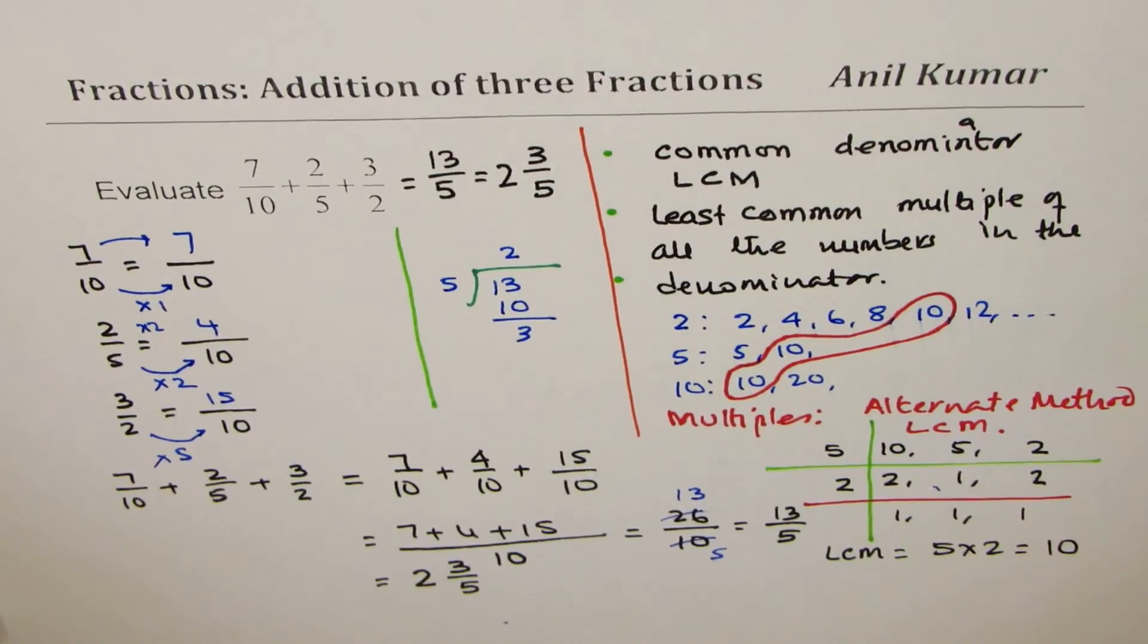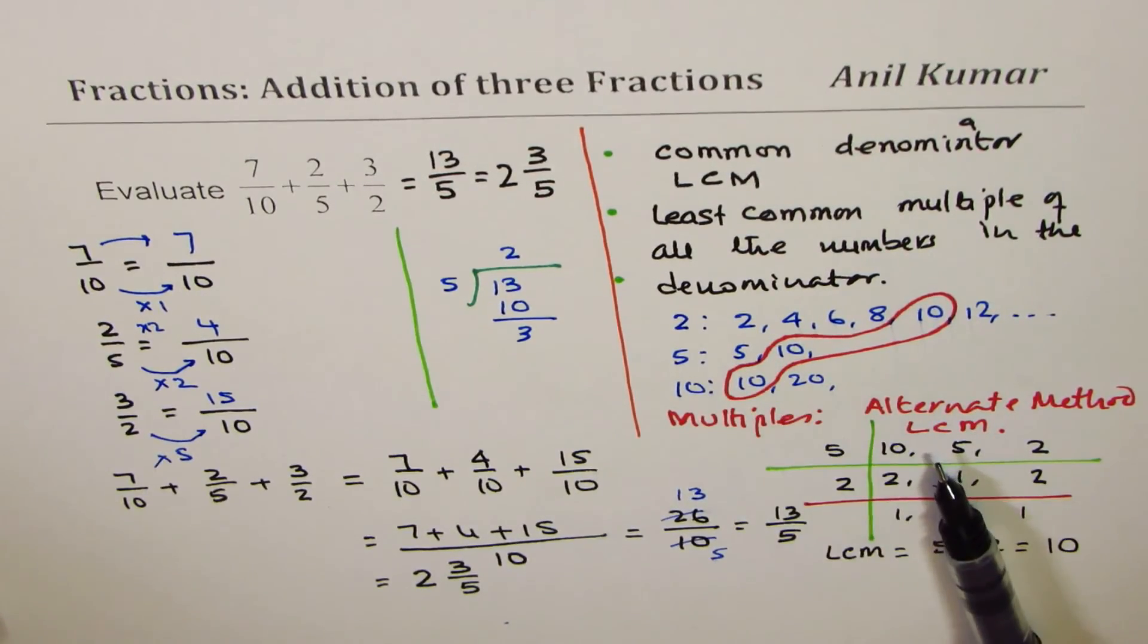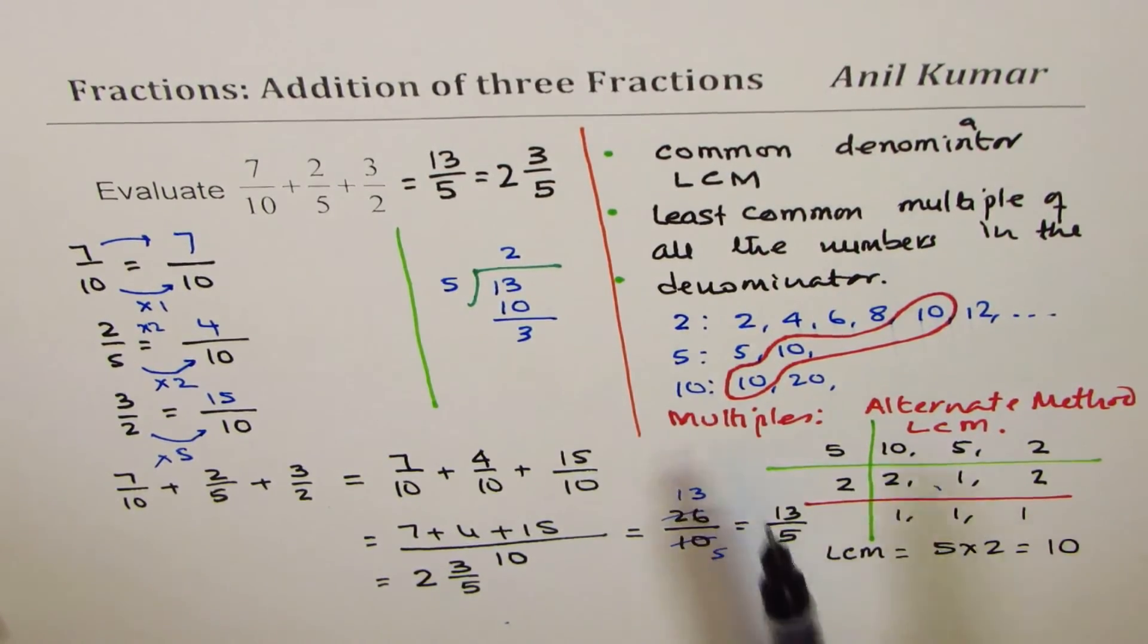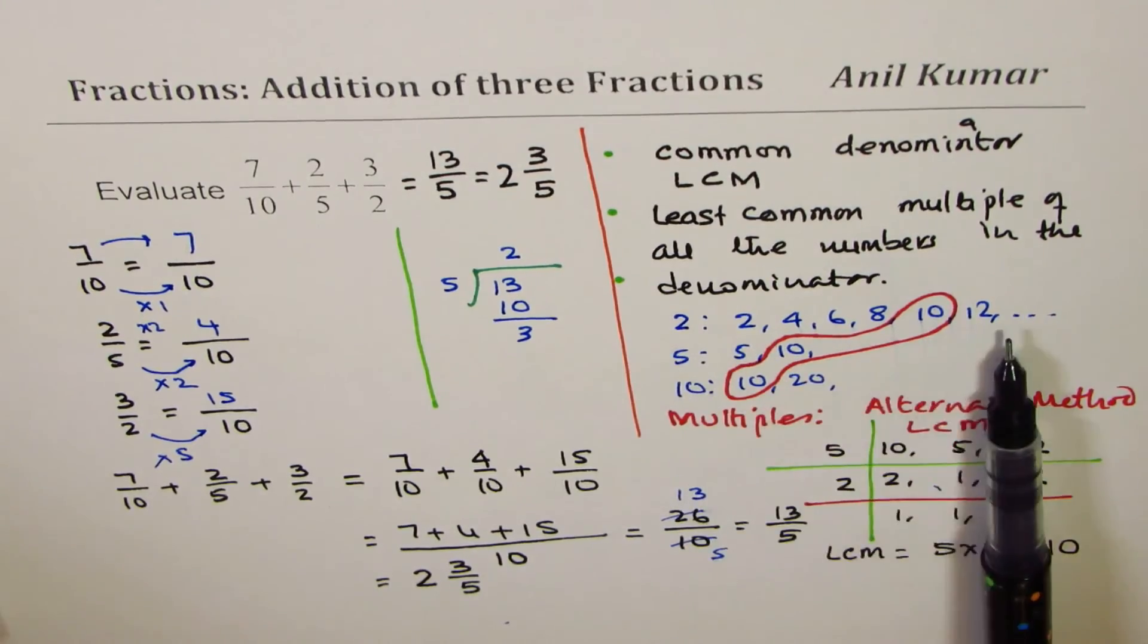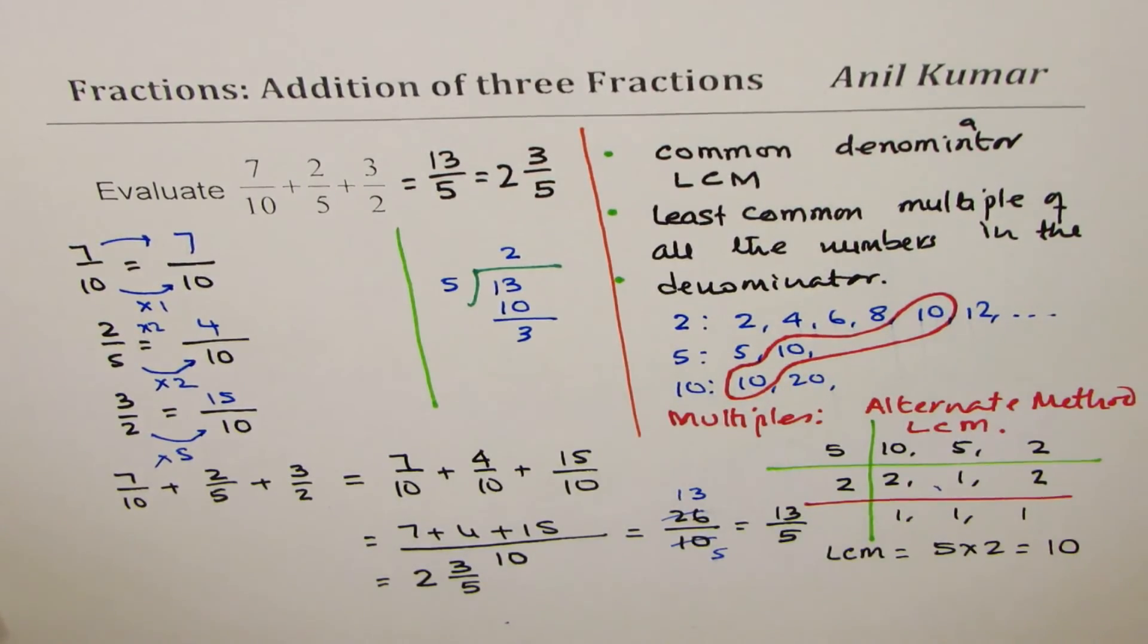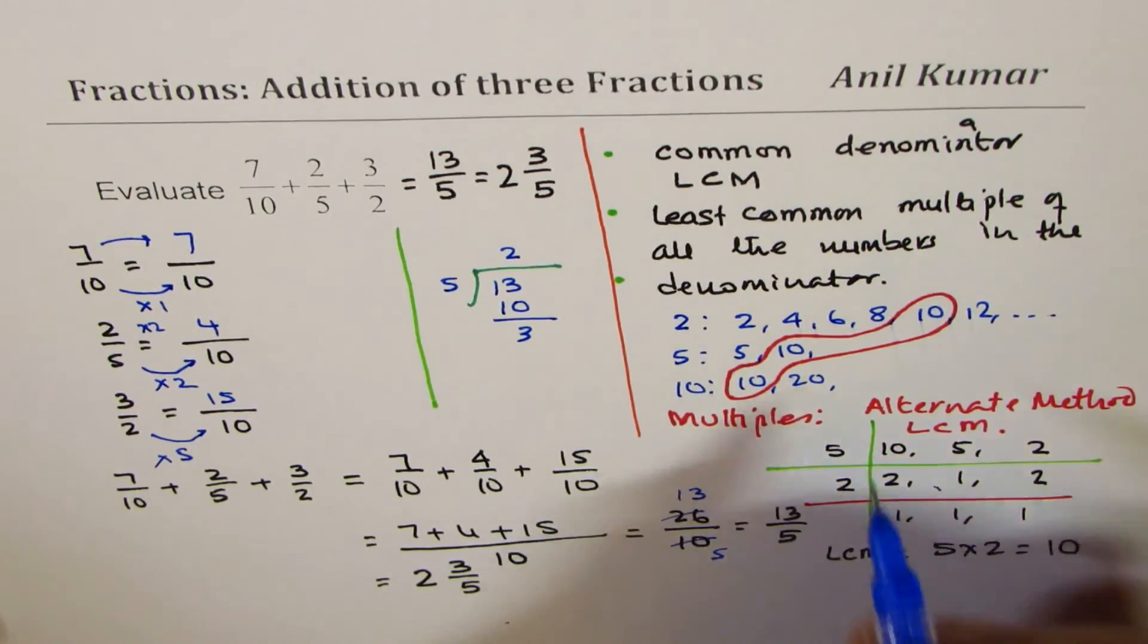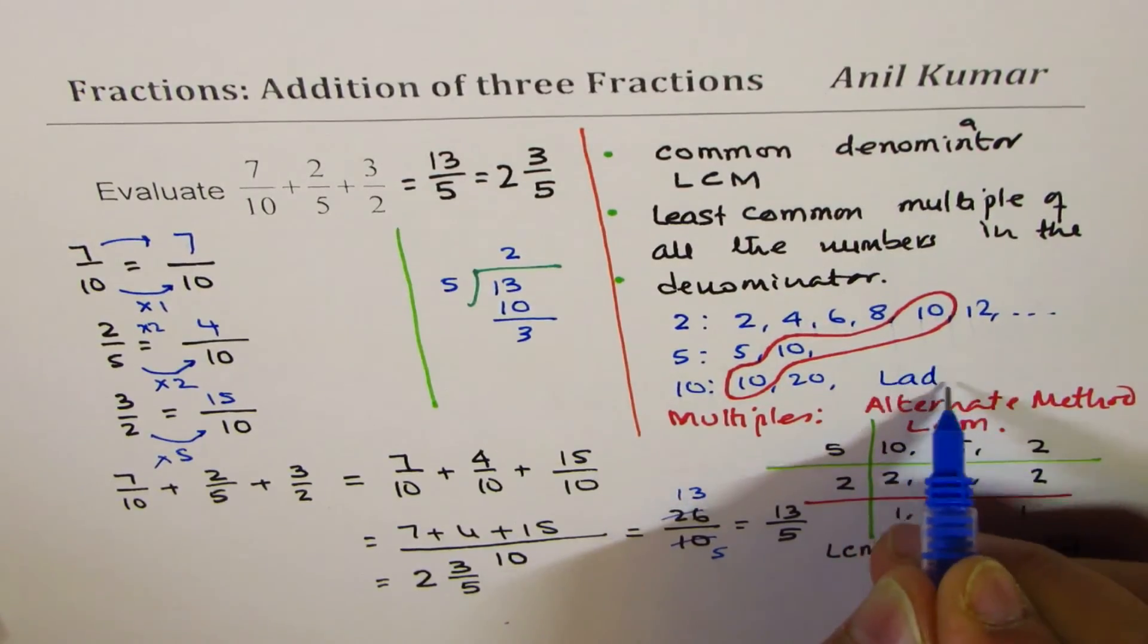We also learn 2 different techniques of finding lowest common denominator. One is to just list out the multiples, check for the common ones. The other one is to use this kind of division, a ladder division which we say. It has a name, it's called the ladder division.